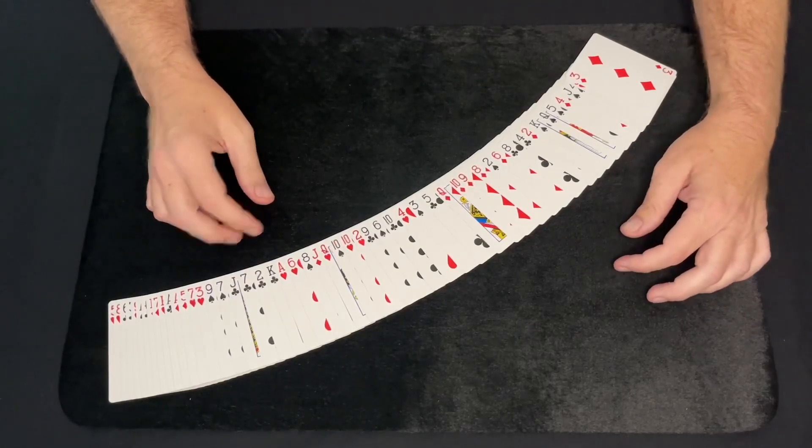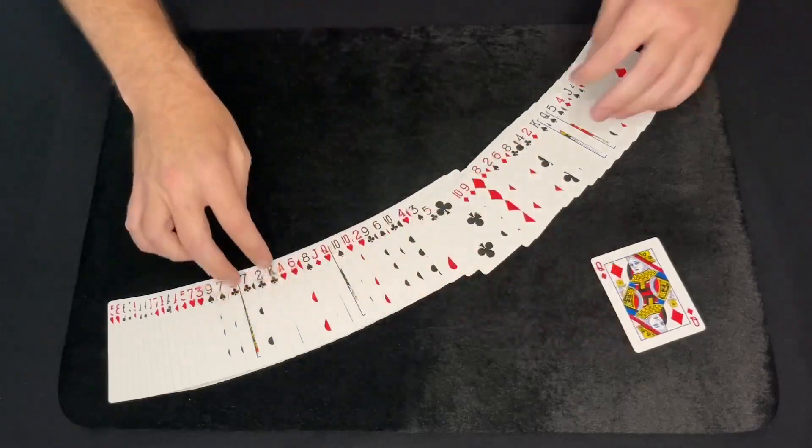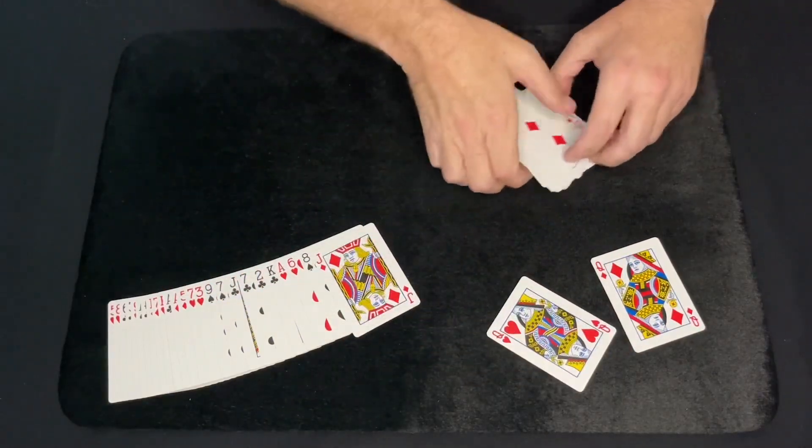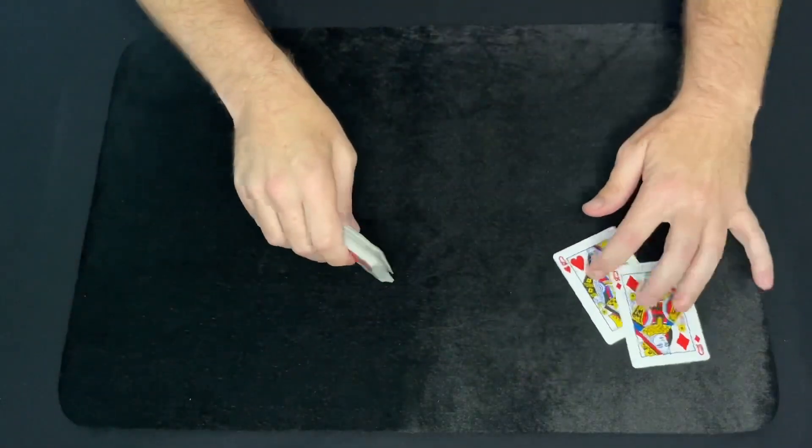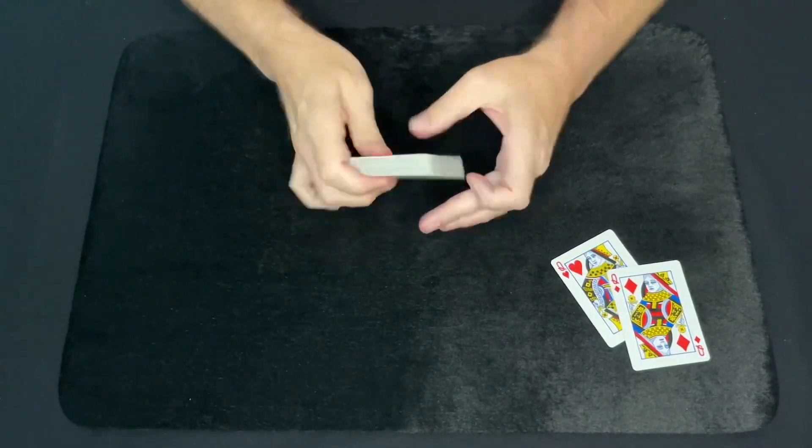This trick is called Between the Two Red Queens, so we're going to need the two red queens for this trick. So here we got the Queen of Diamonds and the Queen of Hearts. And then we just have a regular deck of cards, well-mixed, well-shuffled.